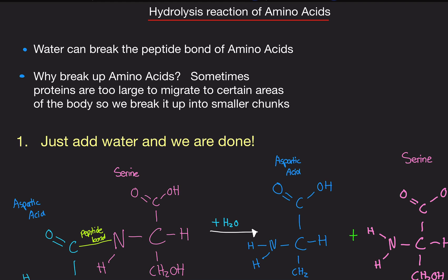But it can't because it's joined in a long chain, right? It's already in a protein. But we need this very specific amino acid to go somewhere in the body. Pretend it's like serine or something and you want this amino acid to go to the brain. This is just completely made up. How do we do that? The protein is too large, so we need to break it up into smaller pieces, smaller chunks, and we use water to do that.